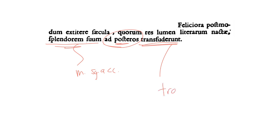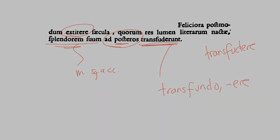Transfuderunt is from trans fundo, to shed upon or to shed across, trans fundo, trans fundere, its third conjugation. But notice here that Poggio does not give a syncopated form like exteterre, he could have written trans fundere, but he decides not to, he gives instead the full form. He could have given trans fundere, but he does not.